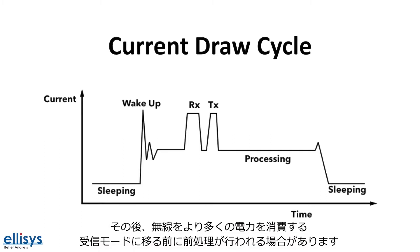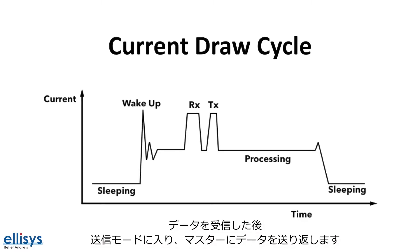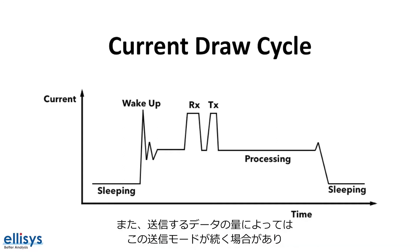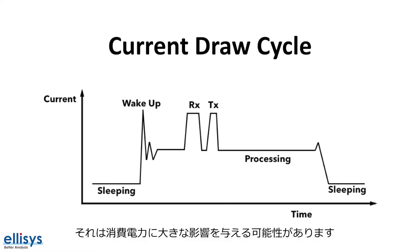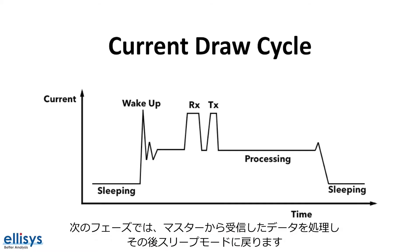After that, there may be some pre-processing before it puts the radio in receive mode, at which point it consumes more power. After receiving the data, it goes into transmit mode to send data back to the master. Depending on how much data there is to send, this may last a while, which could greatly affect power consumption. The next phase is to process the data received from the master, after which it goes back into sleep mode.